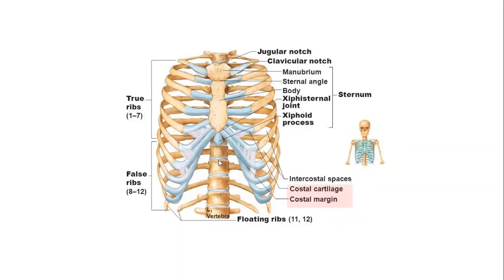Between these two costal margins, below the sternum, forms an angle which is called the subcostal angle or infrasternal angle. Sometimes this angle increases in pregnant females in order to accommodate the developing fetus.